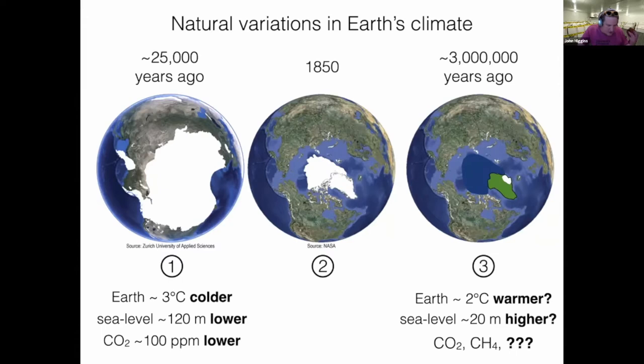We're interested in this because understanding the past and what caused the climate to be very different 20,000 years ago gives us some idea about how it is changing in the present and how it might change in the future. For those of us who look at Earth's past, we look at the future through the lens of analogs of Earth's past behavior.